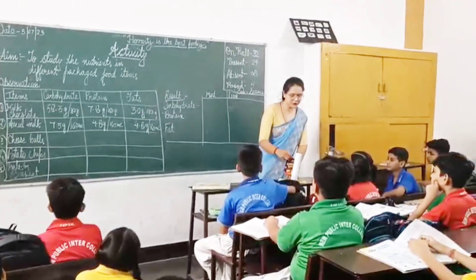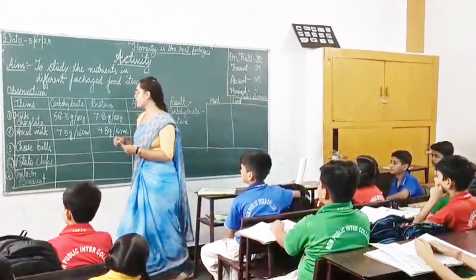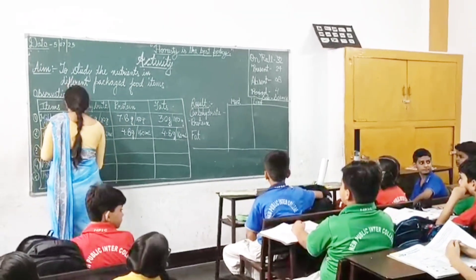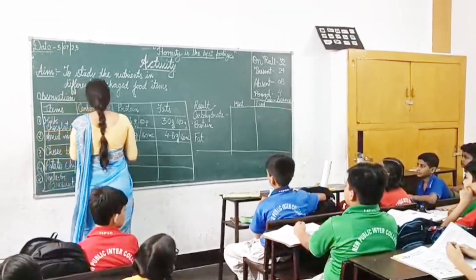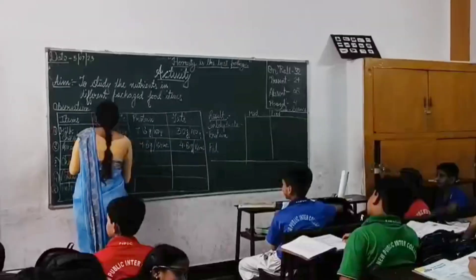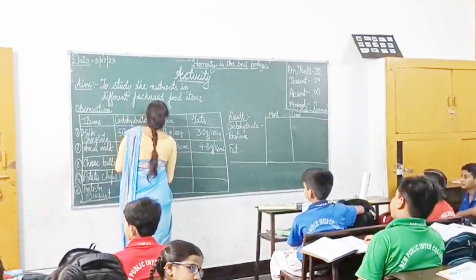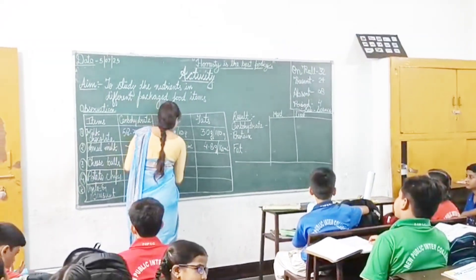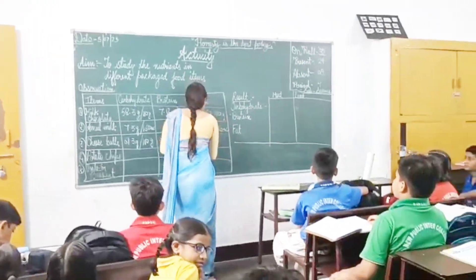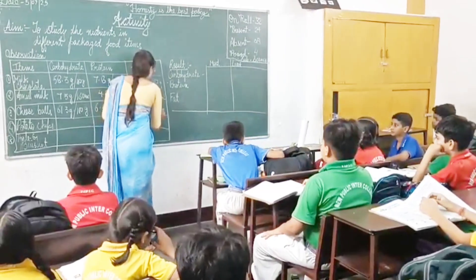Then we have cheese balls. We have carbohydrate 61.3 grams per 100 grams. Then we have protein 6.4 grams per 100 grams. And then we have fat 27 grams per 100 grams.